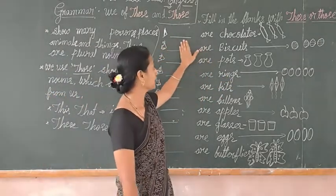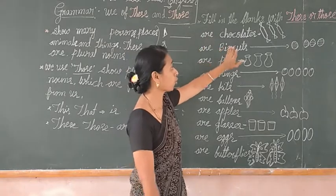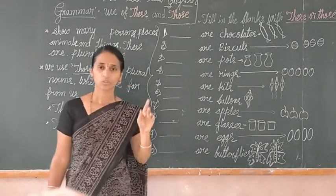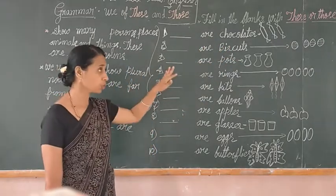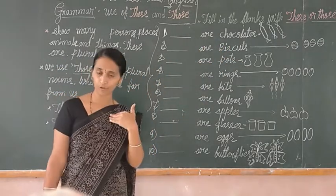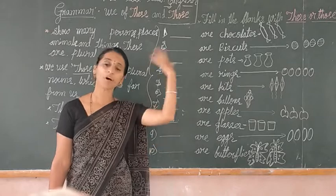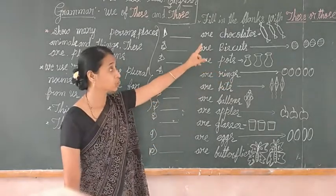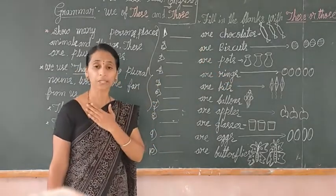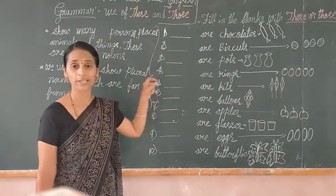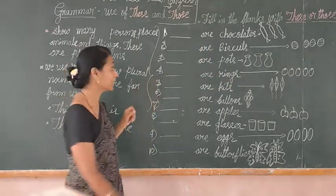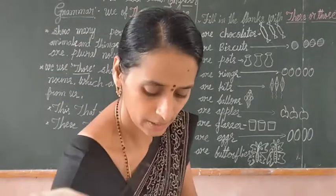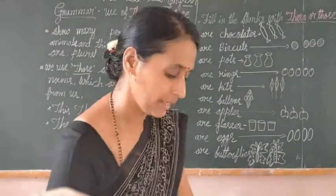First example: blank of chocolates. Are the chocolates near to me or far away? Yes, chocolates are near to me, so we can use 'these.'